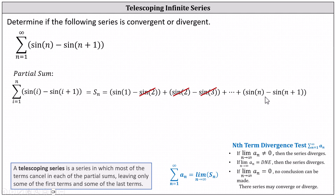For the last set of parentheses, the positive sine n simplifies out with the previous set of parentheses, where we'd have a minus sine n when i equals n minus 1. So the sine n also simplifies out, but the minus sine of the quantity n plus 1 does not simplify out, because it would take another set of parentheses to the right with a positive sine of the quantity n plus 1 — but the upper limit for i is n, not n plus 1.